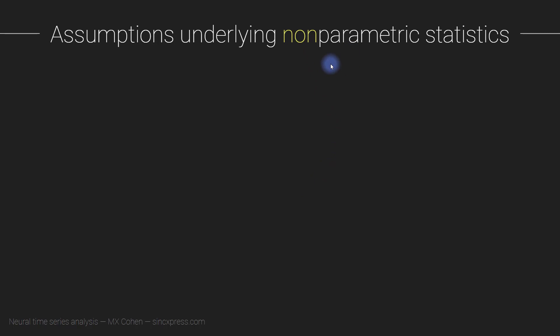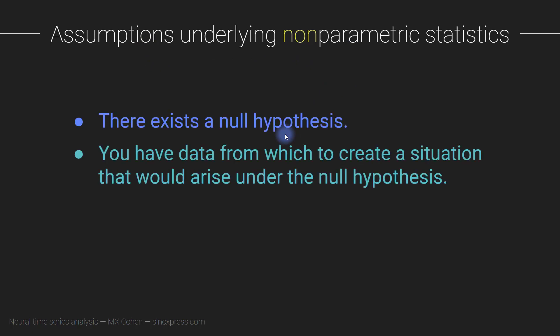Now I'd like to discuss non-parametric statistics and the assumptions underlying non-parametric statistics — in particular, permutation testing. Whenever I teach this and ask students about the assumptions of non-parametric statistics I tend to get confused looks. It turns out non-parametric statistics arguably don't have very strong assumptions — that's kind of the big advantage of non-parametric over parametric statistics.